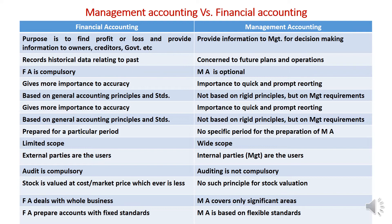Financial accounting records are used by external parties such as outsiders, but management accounts are used by internal parties and top-level managers. In financial accounting, auditing is compulsory, but in management accounting, auditing is not compulsory. In financial accounting, stock is valued at cost price or market price, whichever is less, but in management accounting there is no such rule regarding stock valuation.